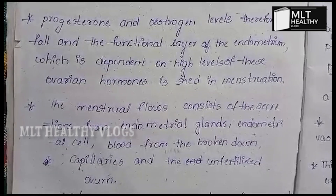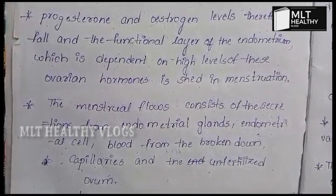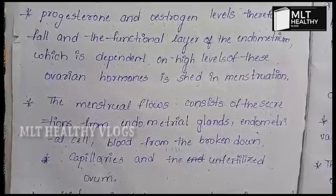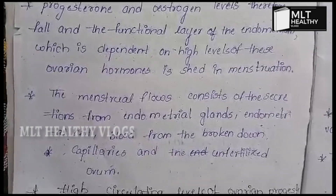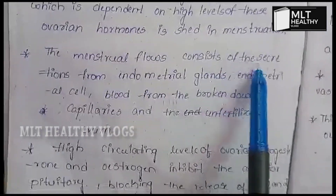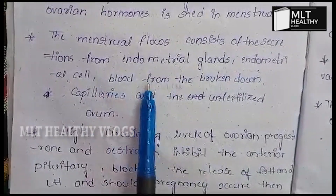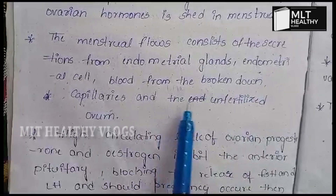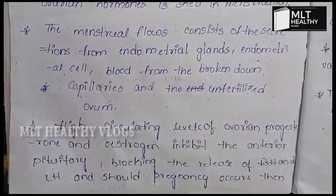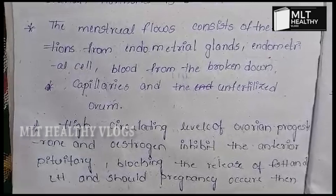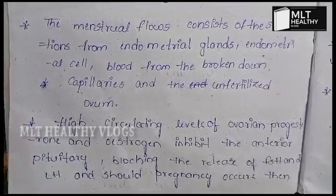The endometrium, which depends upon high levels of ovarian hormones such as progesterone and estrogen, is shed during menstruation. Menstrual flow consists of secretions from the endometrial glands, endometrial cells, blood from the broken-down capillaries, and the unfertilized ovum.